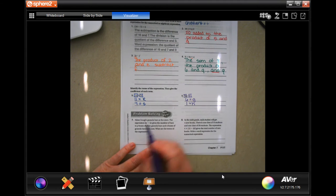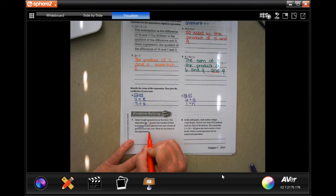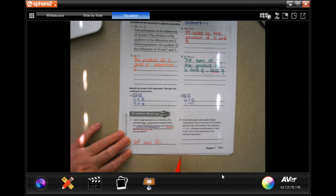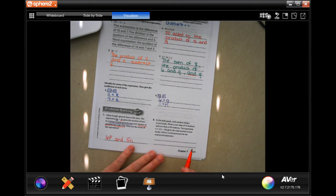Adam bought granola bars at the store. The expression 6P plus 5N gives the number of bars. P is the boxes of plain granola bars and N is the boxes of granola bars with nuts. So what are the terms of the expression? Well, the terms are 6P and 5N. Almost super easy guys.